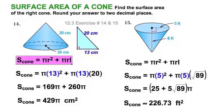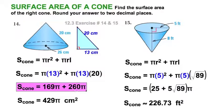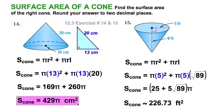We do our arithmetic: 169π and 260π can be combined to 429π. We'll leave this one in terms of pi for now, and get some decimal practice to the right. Remember to throw the units on at the end — those are square centimeters. Over on the right here, number 15, I've got a radius of 5 and a height of 8.